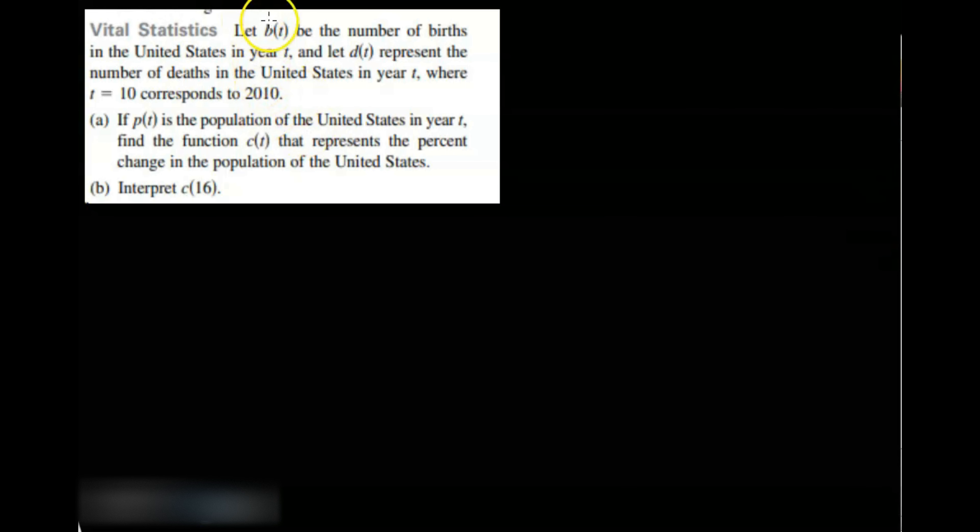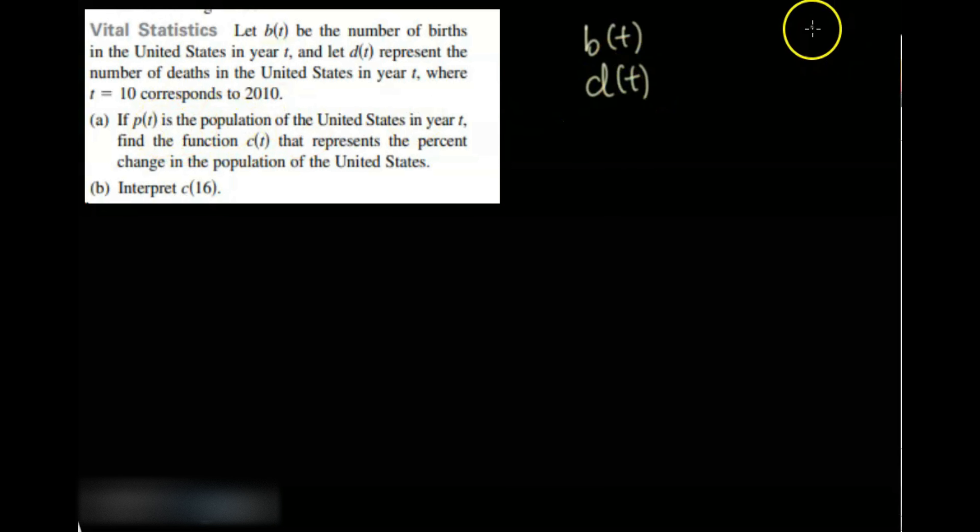Similarly, we have another interesting example from our precalculus textbook. It says: let b of t be the number of births in the United States, and d of t be the number of deaths at time t, where t equal to 10 means 2010.